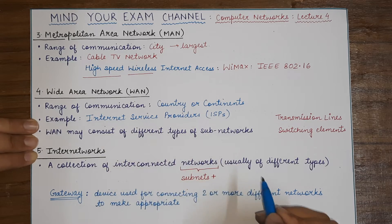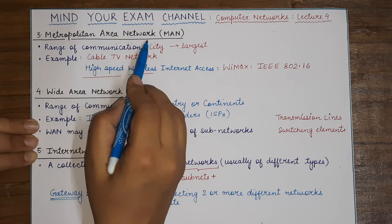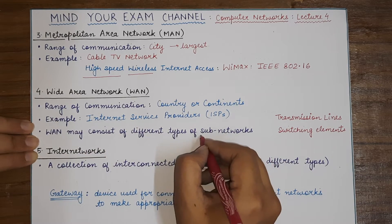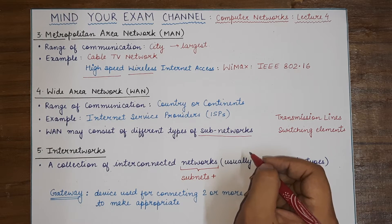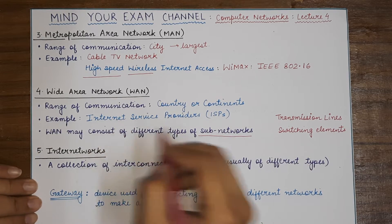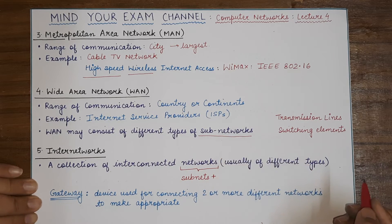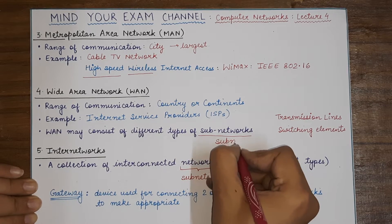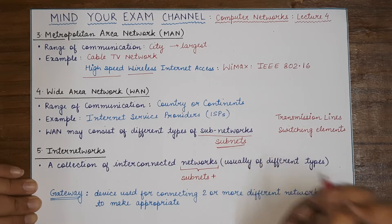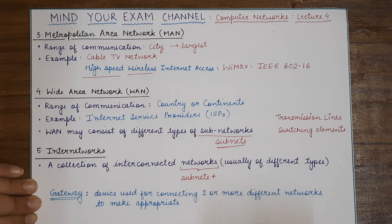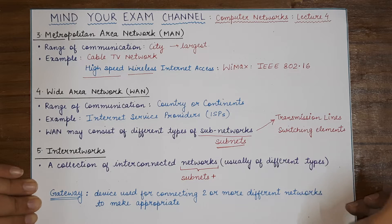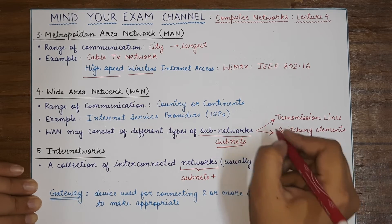If a company is present only within multiple locations of a single city, it will be known as a Metropolitan Area Network. Now, one important thing about a Wide Area Network is that it consists of different sub-networks. Since the geographical area of a WAN is very large, we can divide a WAN into sub-networks, also known as subnets.